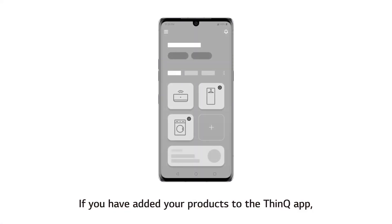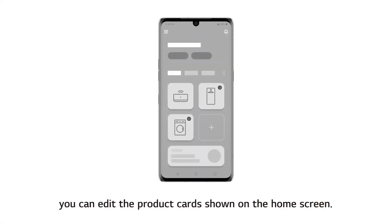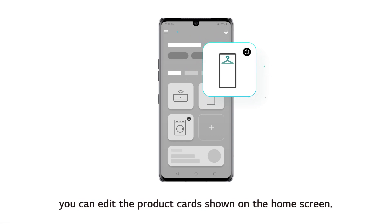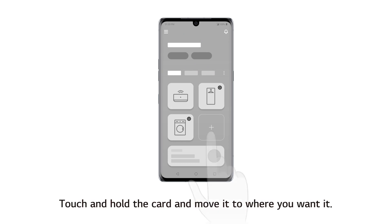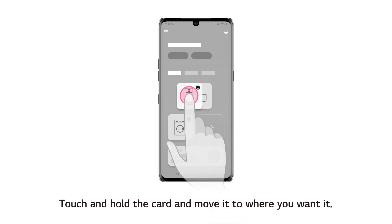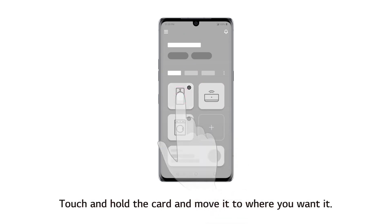Editing Product Cards. If you have added your products to the ThinQ App, you can edit the product cards shown on the home screen. Move the cards first — touch and hold the card and move it to where you want it.